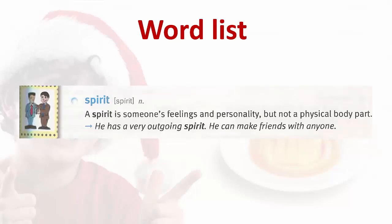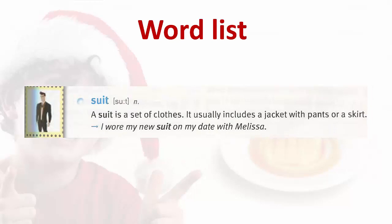Spirit. A spirit is someone's feelings and personality, but not a physical body part. He has a very outgoing spirit — he can make friends with anyone. Suit. A suit is a set of clothes. It usually includes a jacket with pants or a skirt. I wore my new suit on my date with Melissa.